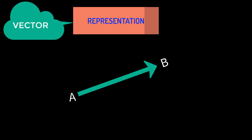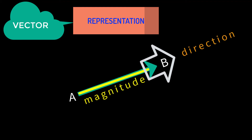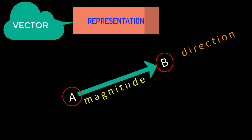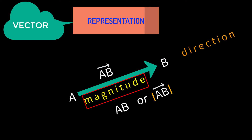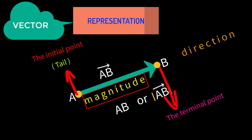The length of the straight line represents the magnitude of the quantity and the arrow represents the direction. The arrow-headed straight line AB is representing a vector quantity. This length is representing its magnitude and this arrowhead is representing its direction. AB vector is represented by arrow over AB, and the magnitude of this vector by either AB or modulus of AB vector. The point A from where the vector AB starts is called the initial point, also called the tail. The point B where it ends is called the terminal point, also called the head.